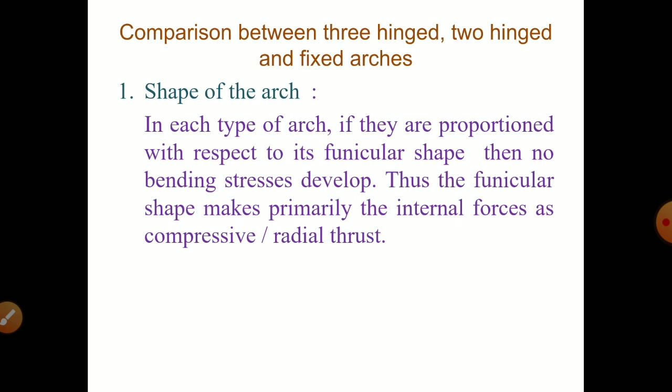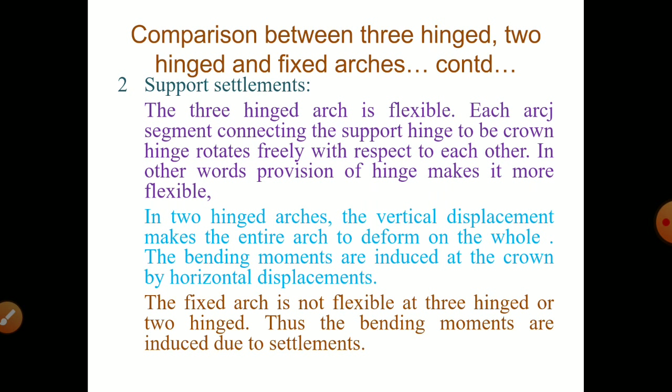The comparison between three-hinged arch, two-hinged arch, and fixed arches. With respect to shape, if the hinged type of arch is proportioned with respect to its funicular shape, then no bending stresses develop. Thus, the funicular shape makes the internal forces primarily compressive or radial thrust. In case of support settlements, three-hinged arch is flexible. Each arch segment connecting the support hinge to the crown hinge rotates freely with respect to each other. In other words, provision of hinges makes it more flexible.